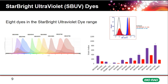The StarBright ultraviolet series contains eight dyes ranging from StarBright UV 400 to StarBright UV 795. They have been designed to be as bright or brighter than competitor dyes. For example, StarBright UV 400 is roughly twice as bright as the competitor dye. Using CD4 staining on human peripheral blood averaged across three to four samples, the stain index for all StarBright dyes is higher than the competitor dyes, especially at longer Stokes shifts.